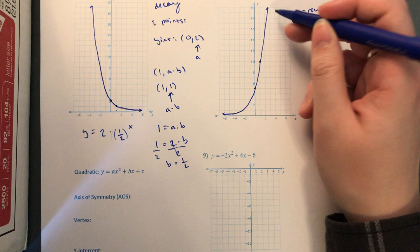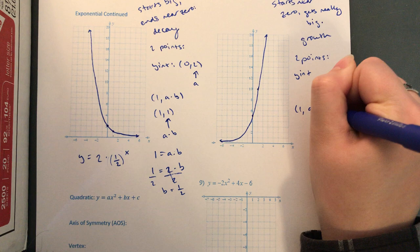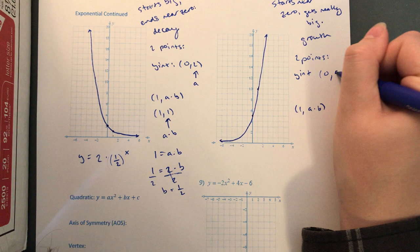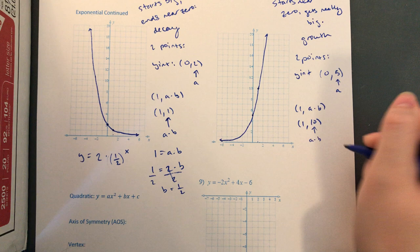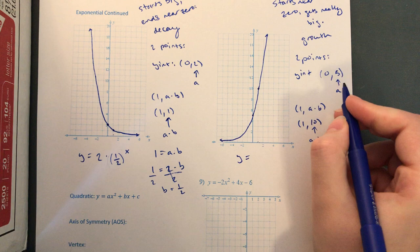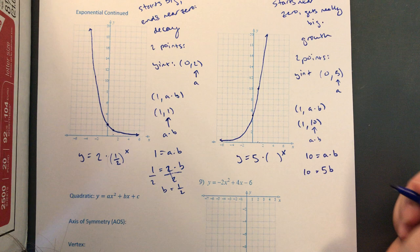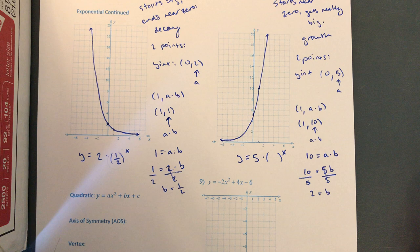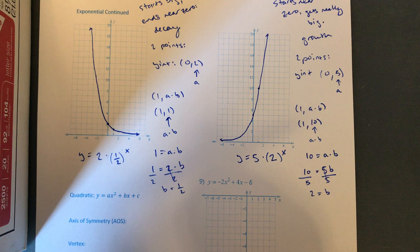For the growth graph, your b value should be greater than one. The y-intercept is (0, 5), so five is your a value. At x equals one, the output is 10, so (1, 10) equals a times b. We have y equals five times something to the x. So 10 equals five times b — divide both sides by five, giving b equals 2. Double-check: it should be a growth function, and two is bigger than one, so it's growth and we're good to go.